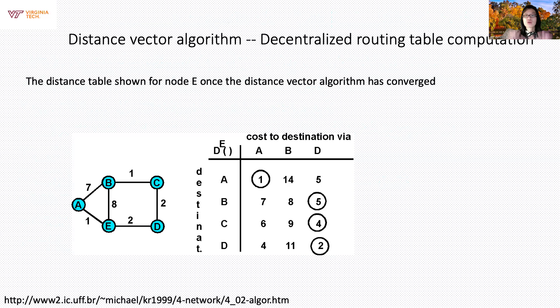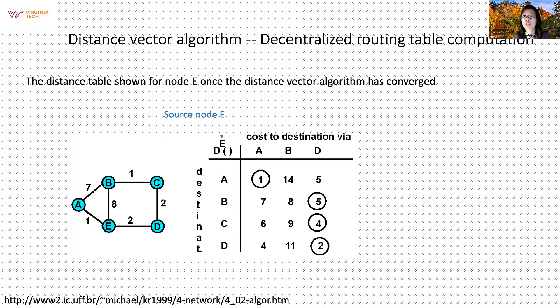Last time we said that routers have the ability to compute, in a decentralized way, the right routes to get to a destination even though they don't have a direct hop. This is called a distance vector algorithm. You can compute it in a distributed fashion. It takes time to converge, but at some point you get the optimal solution.